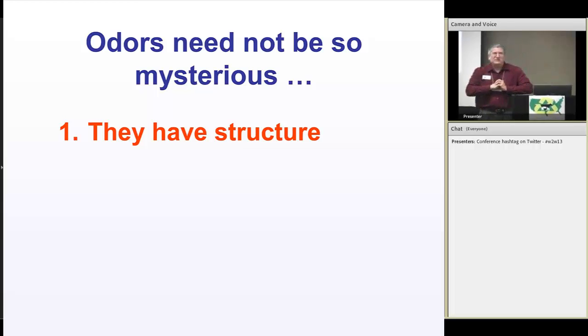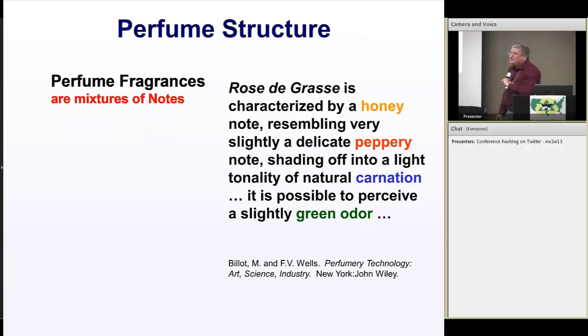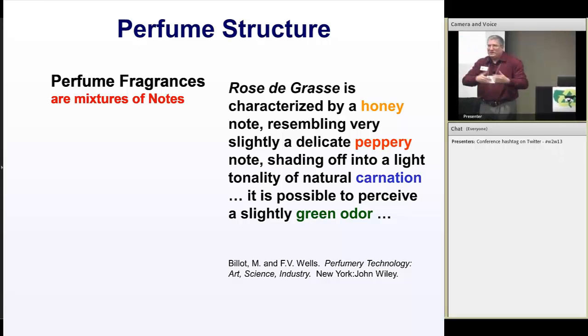Odors aren't so mysterious. They are mysterious, but they don't need to be because they have a structure and we can measure them. Your first question is how can something we can't see and touch have structure? That's exactly what the perfume people say, odors have structures. They've been selling perfume for about 3,000 years, way back to Egyptian time. When did gas chromatographs come out?